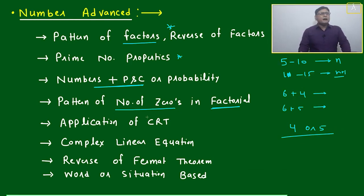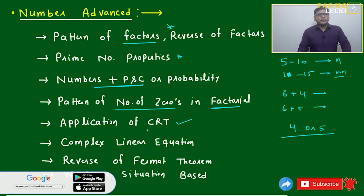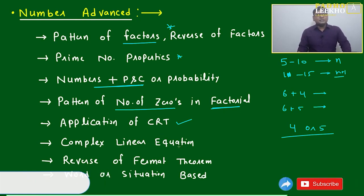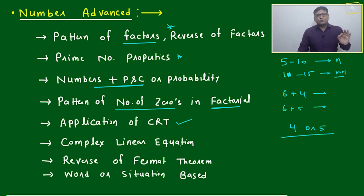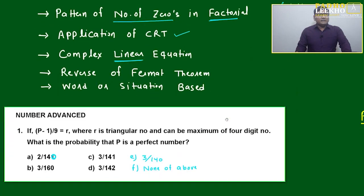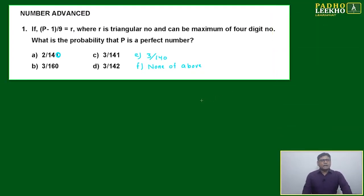Then there is the pattern of number of zeros in factorial, application of CRT (Chinese Remainder Theorem) — another area where you can find many good number advance questions. Next is complex linear equations where we apply integral solutions, and another area is the reverse of Fermat's theorem and word or situation-based questions. Conceptually I cannot discuss all of these — we'll just try to solve one or two questions.